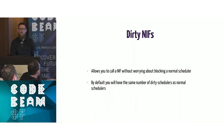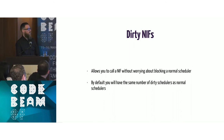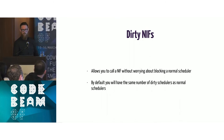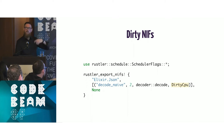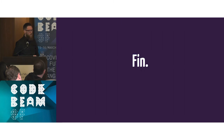The last thing to mention is dirty NIFs. Starting at OTP 20 this is on by default — it was experimental for a while. It allows you to call NIFs without worrying about blocking the normal schedulers, using a separate set of dirty schedulers. In your NIF exports you specify the scheduler_flags: dirty_cpu for CPU-bound work or dirty_io for IO-bound work.